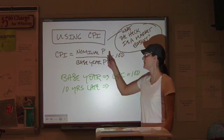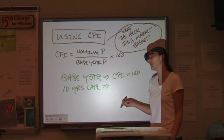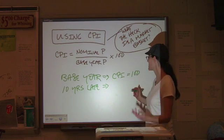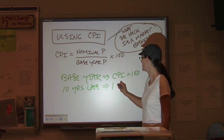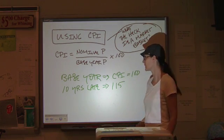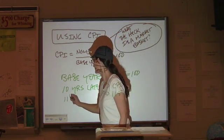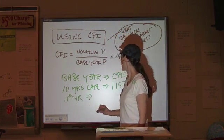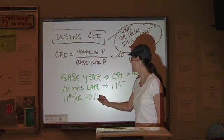you're going to have nominal divided by base year times 100. Let's say that that gives us a CPI of 115. The next year, the 11th year, we get a CPI of 118.